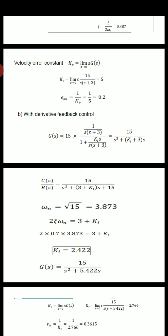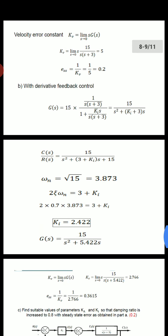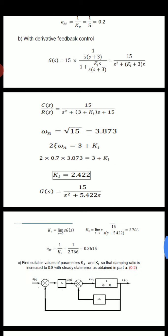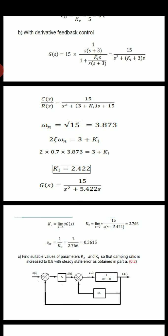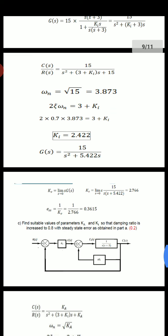The damping ratio ζ = 0.7 was given in part (b). So G(s) = 15 divided by (s² + 5.422s). Next, kv = limit as s→0 of s·G(s). Substituting s = 0, we get kv = 2.766, and ess = 1/kv = 0.3615.